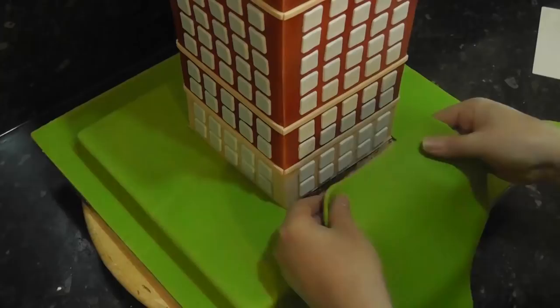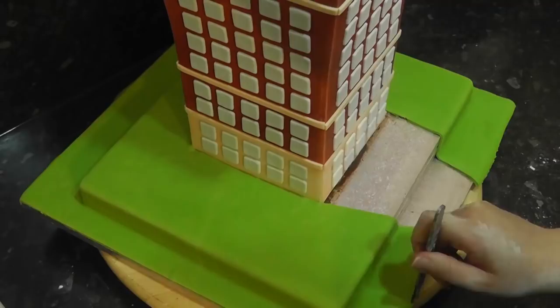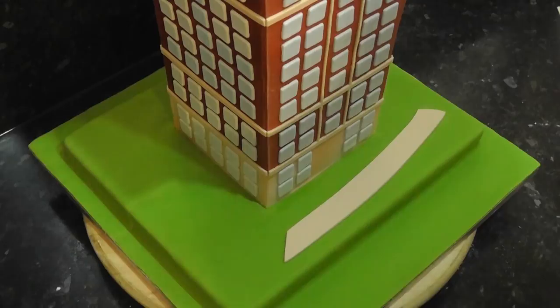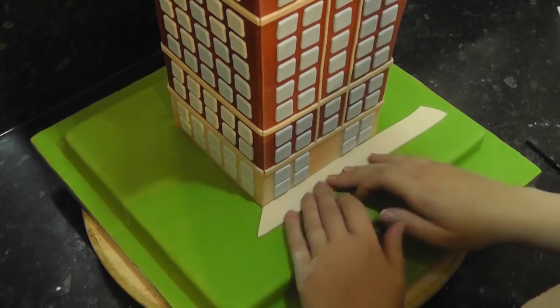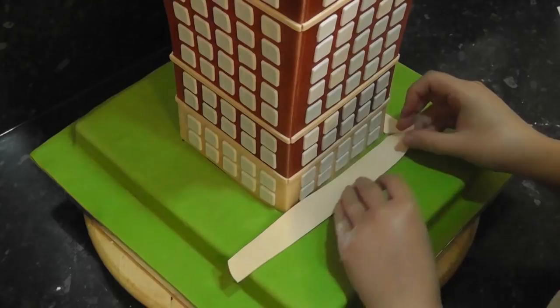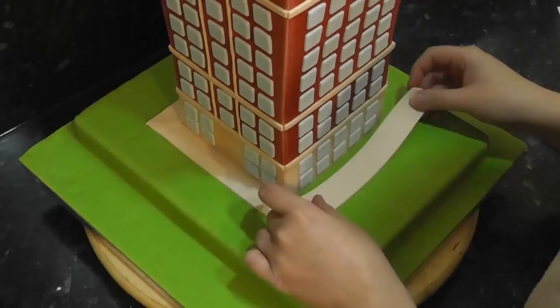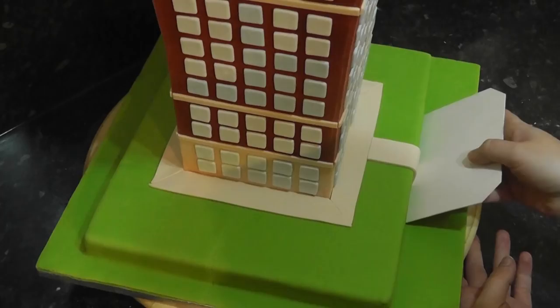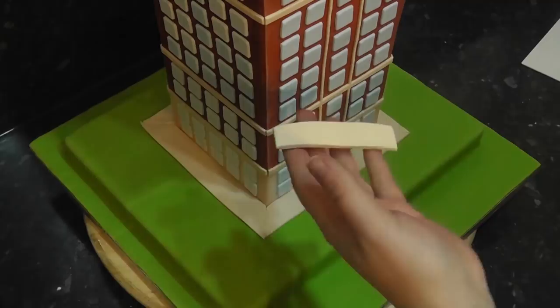The pathway is strips of pale peach fondant cut at angles so they slot together. The centre path is just a strip attached with water. To make the doorway cut a strip and wet one edge. Curve this over and attach the wet edge to the cake to create an arch.